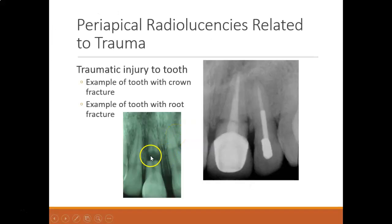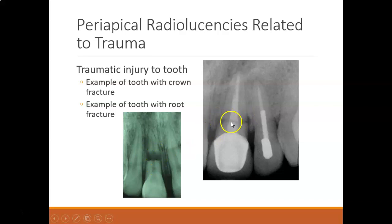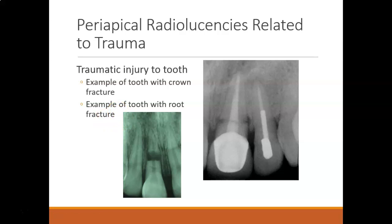Here's an example of traumatic injury to a tooth — a fracture. You can see how it's fractured horizontally along the root. Usually it's a blow to the mouth; trauma is usually what causes that fracture.